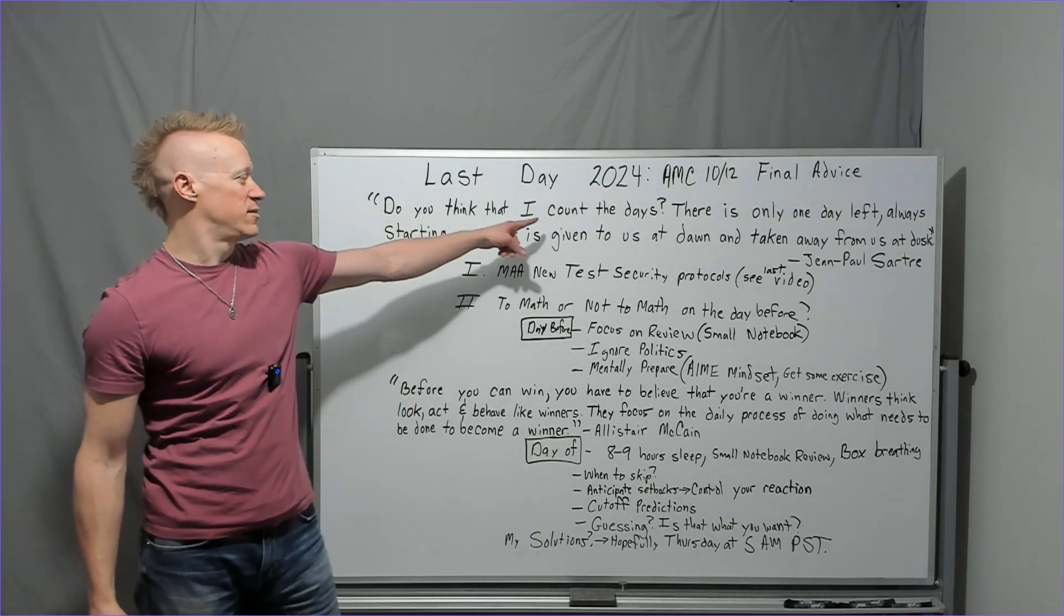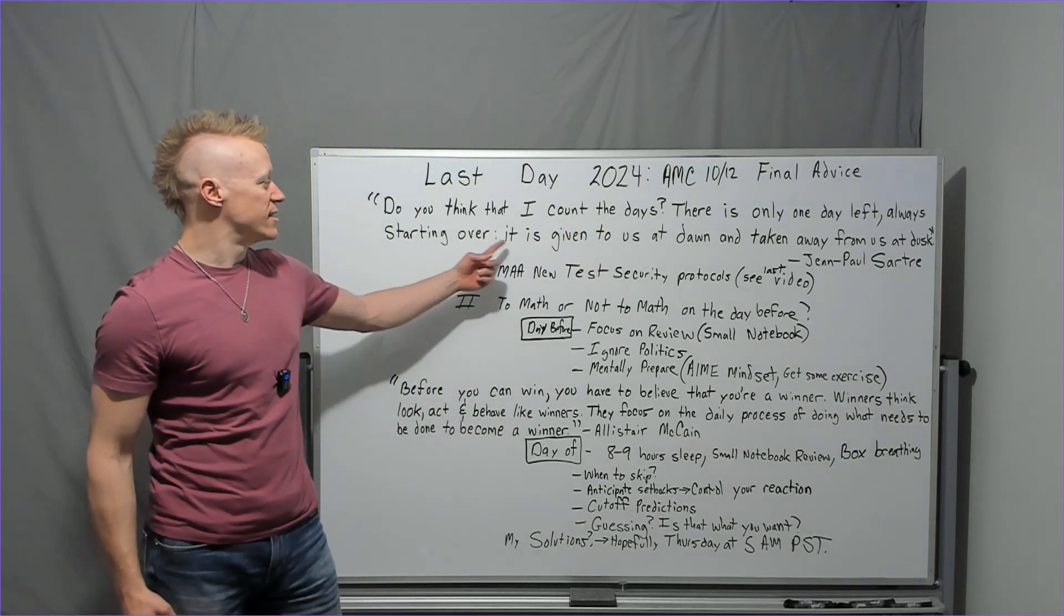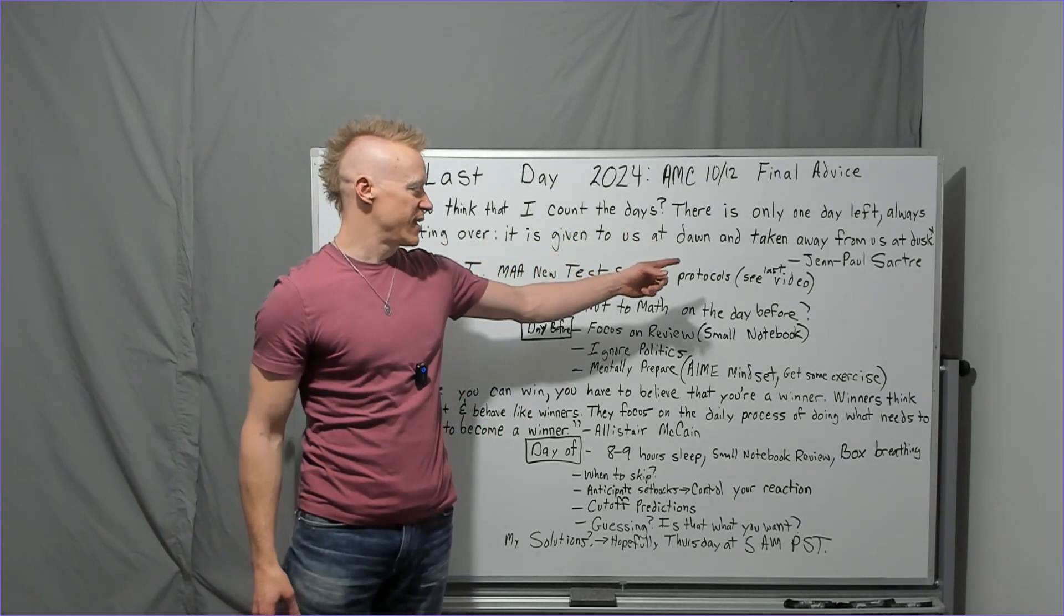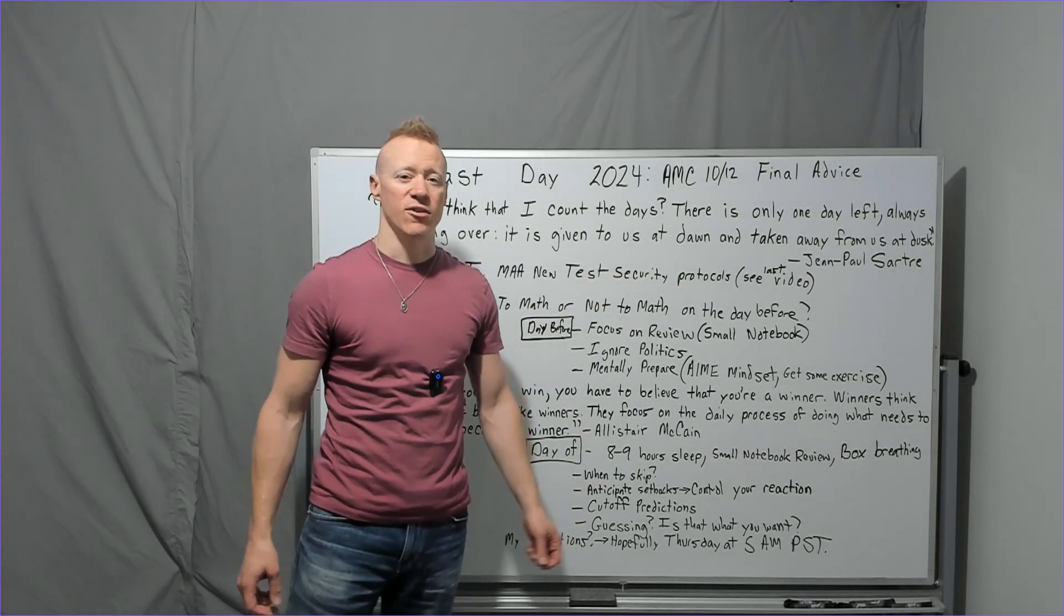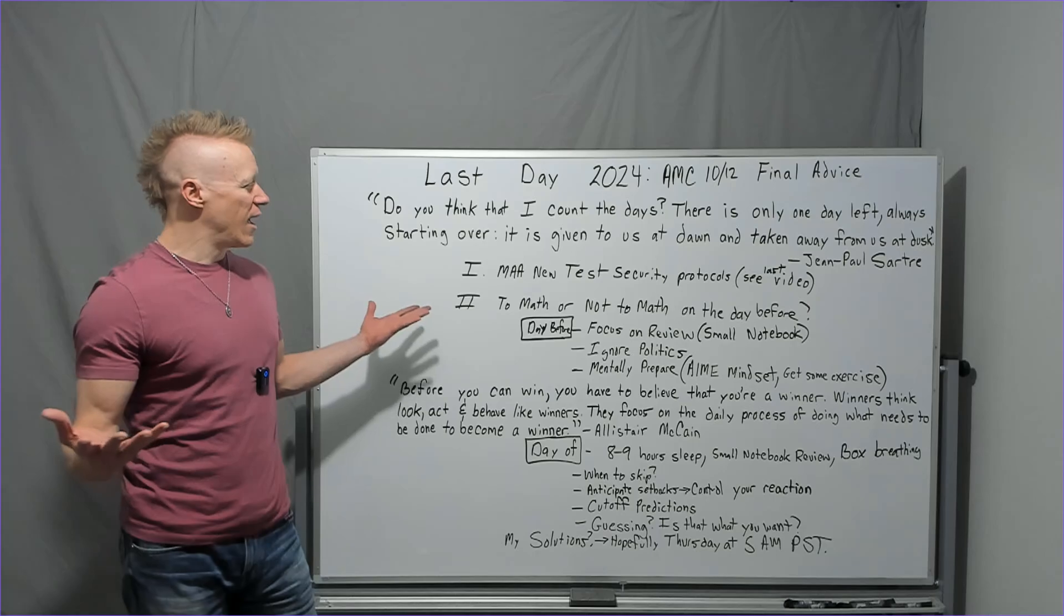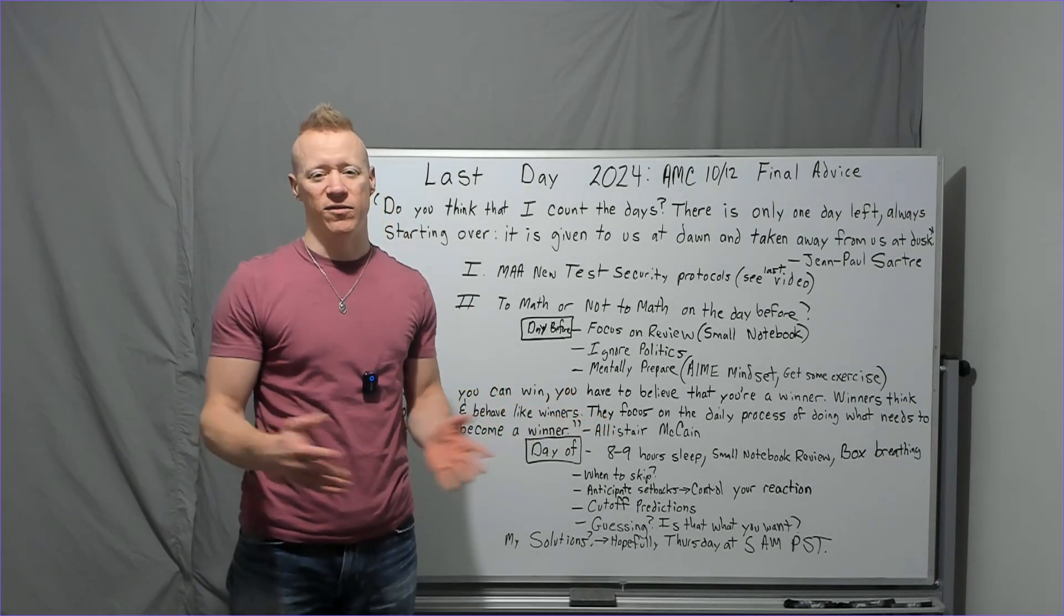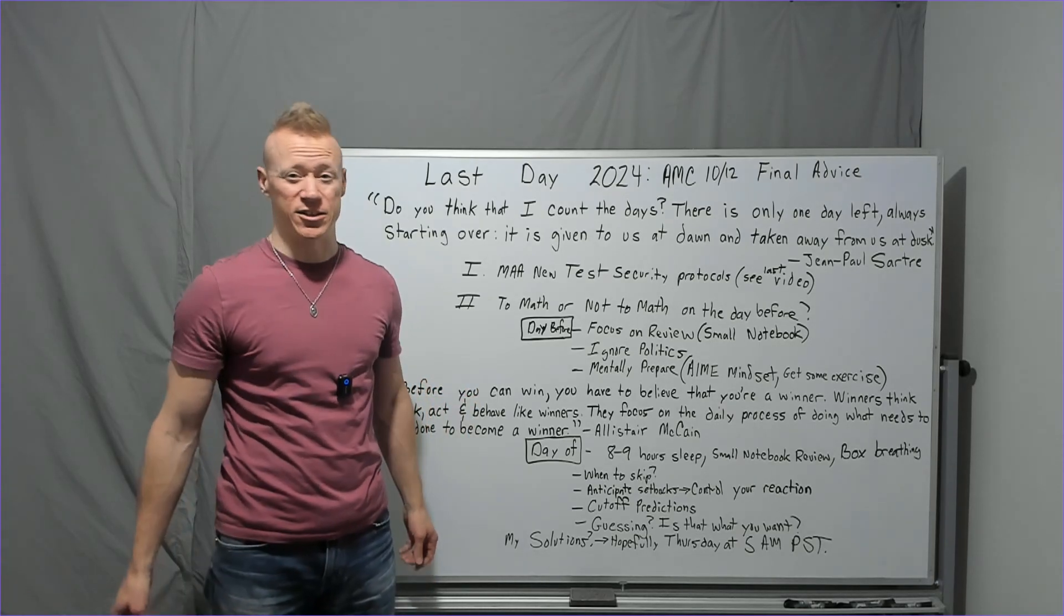Do you think that I count the days? There is only one day left, always starting over. It is given to us at dawn and taken away from us at dusk. French philosopher Jean-Paul Sartre. So, why the quote then? Because that's what it is. Tomorrow, Wednesday, November 6th is your day.